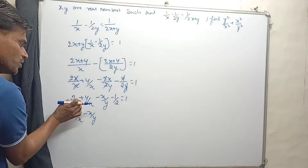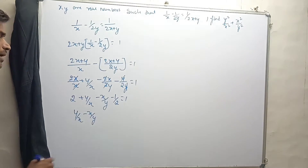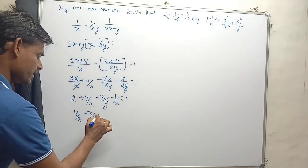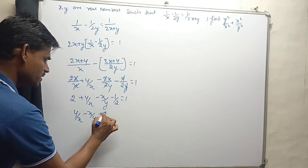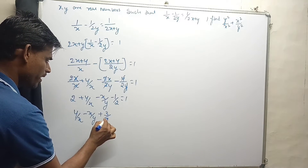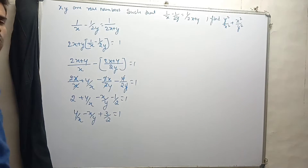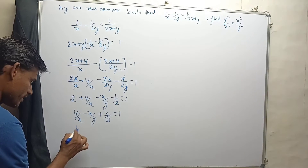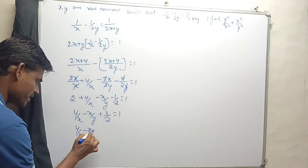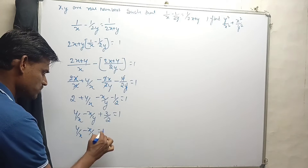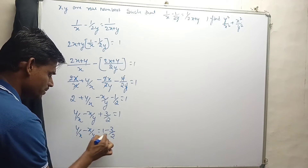Then we have minus 1/2 equals 1. So y/x minus x/y plus 2 minus 1/2 equals 1, which gives 3/2. Therefore y/x minus x/y equals 1 minus 3/2, which equals minus 1/2.